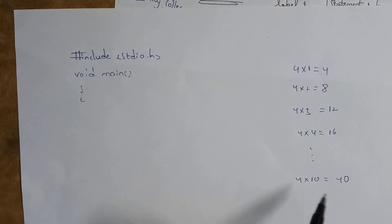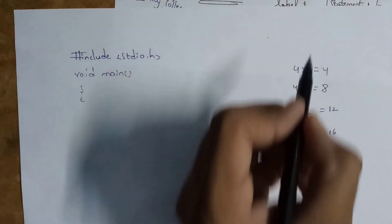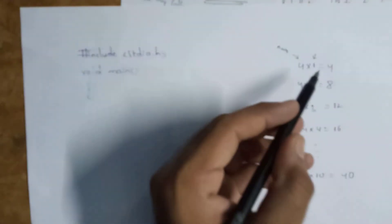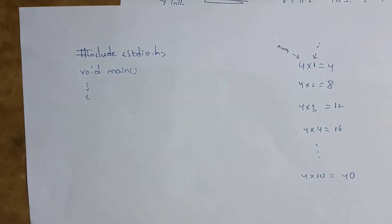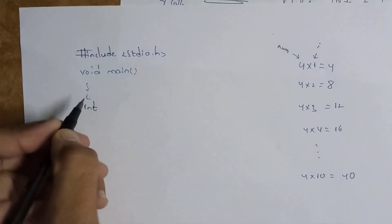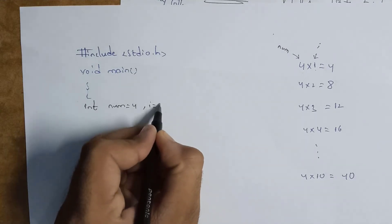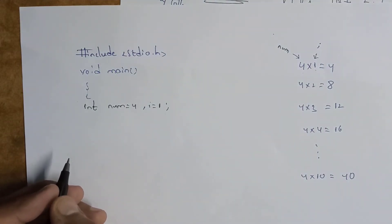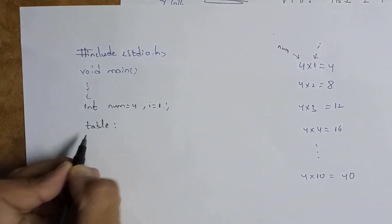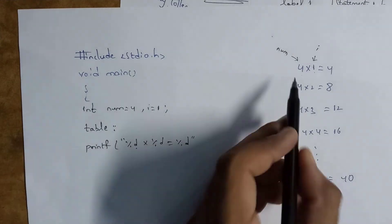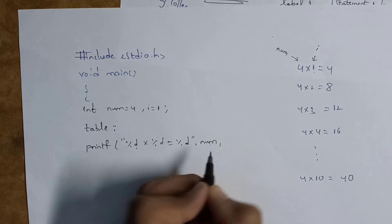Now I will explain a C program to print the 4 times table using the goto statement. I need two variables: one for the number 4, and another for the multiplier going from 1 to 10. I take variable name 'number' for 4 and variable 'i' for 1 to 10. So I write: int number = 4, i = 1. Then I write the goto statement with label name 'table'. Inside label 'table' I write printf("%d into %d = %d", number, i, number*i).